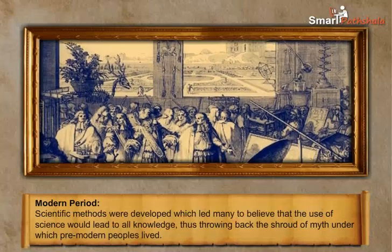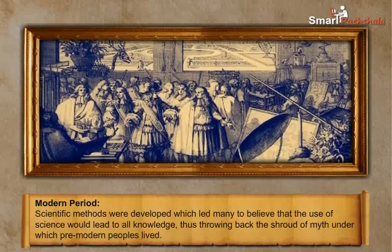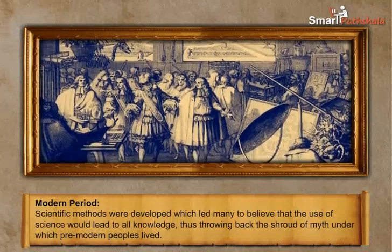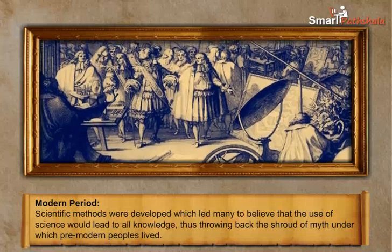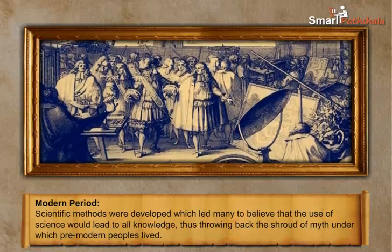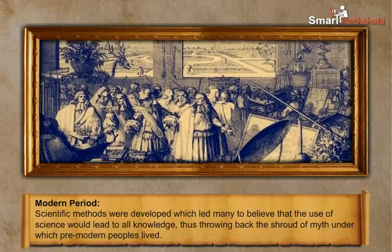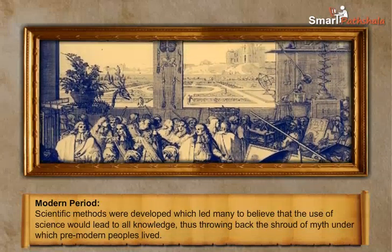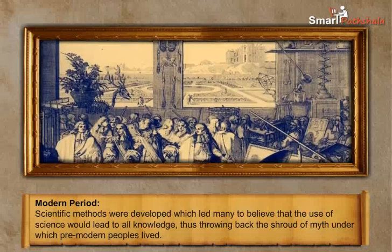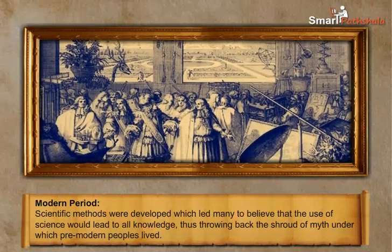The modern period tells us how and why Americans adopted radically new methods of managing and thinking during the 20th century. Scientific methods were developed, which led many to believe that the use of science would lead to all knowledge, thus throwing back the shroud of myth under which pre-modern people lived.